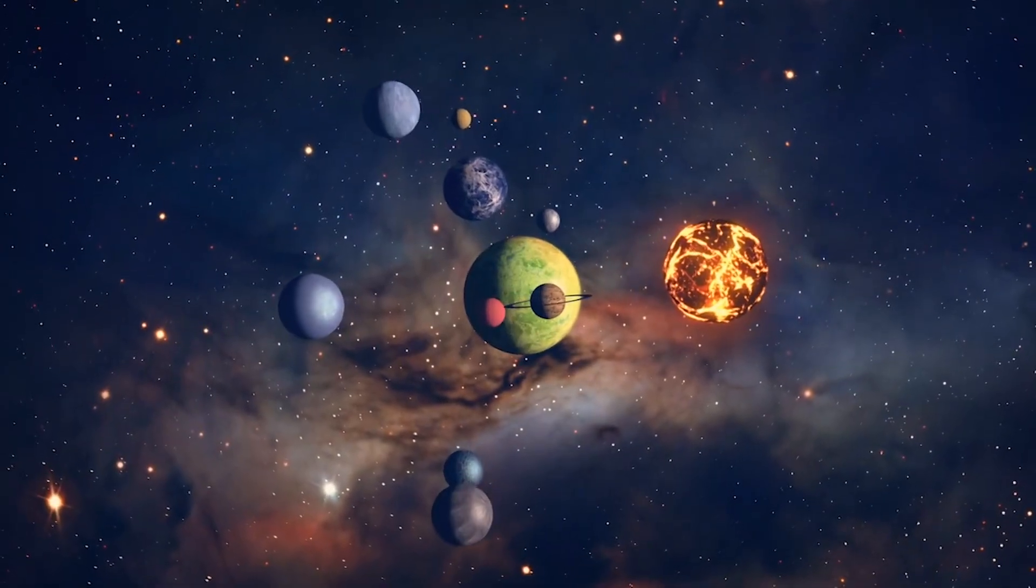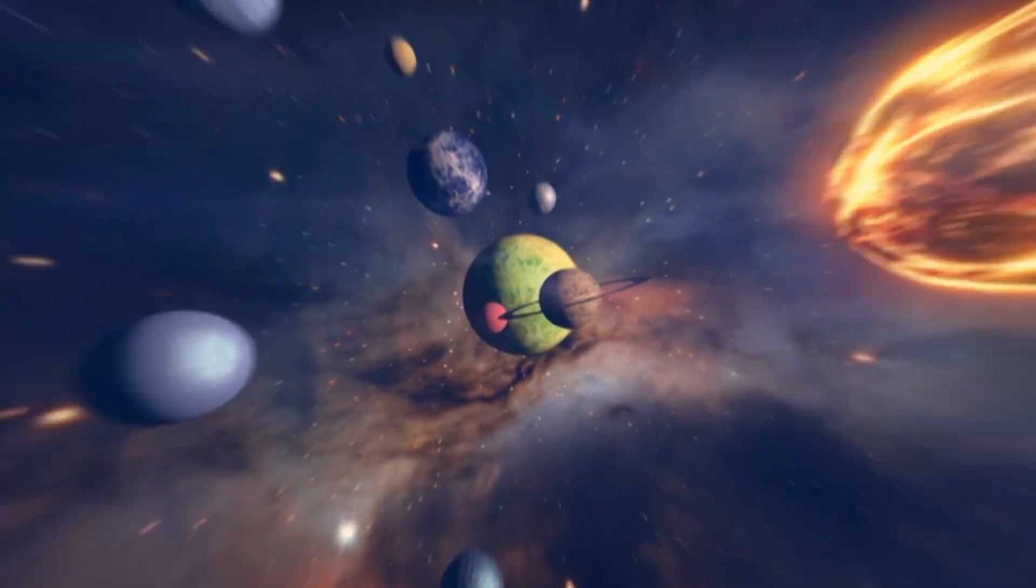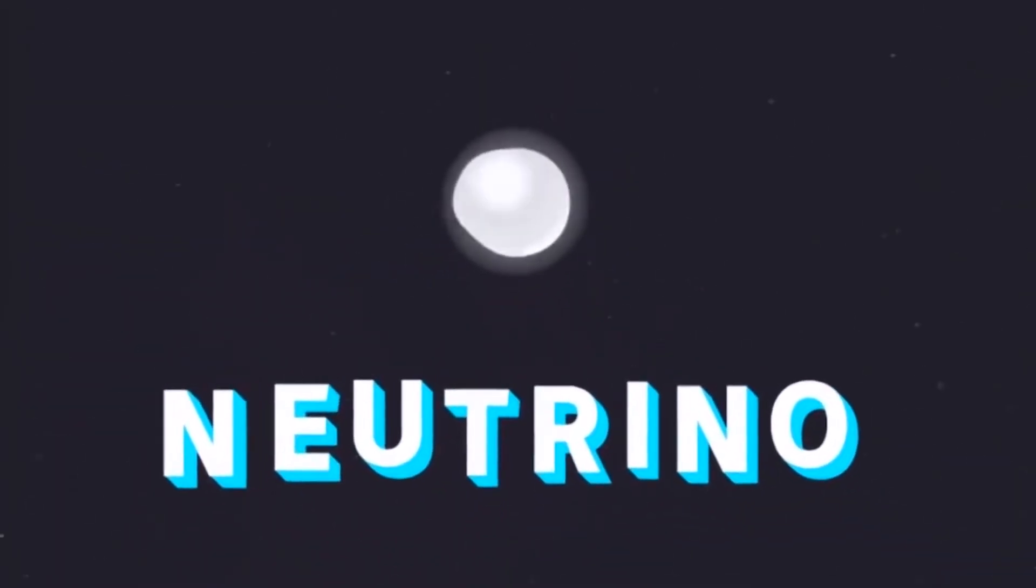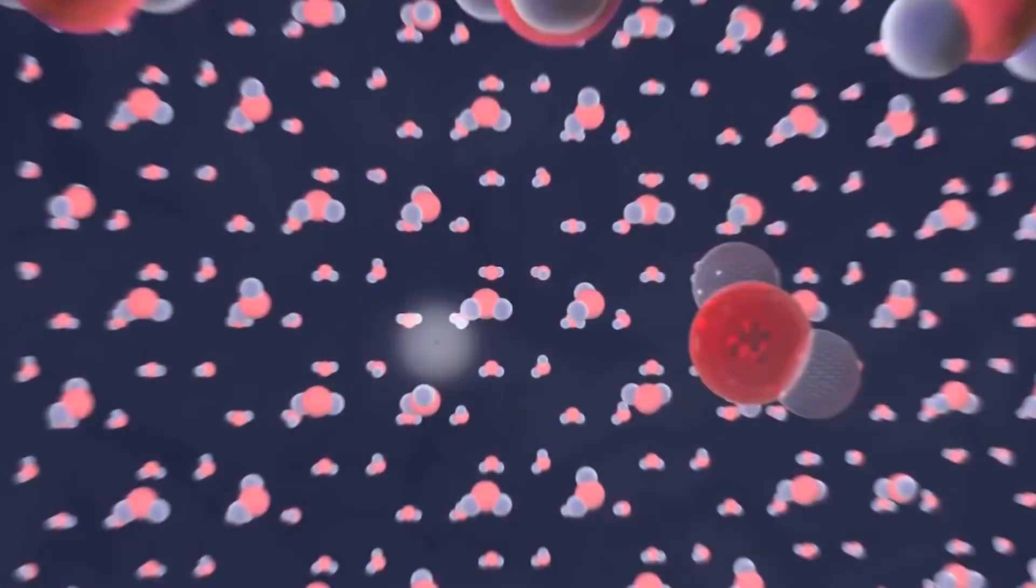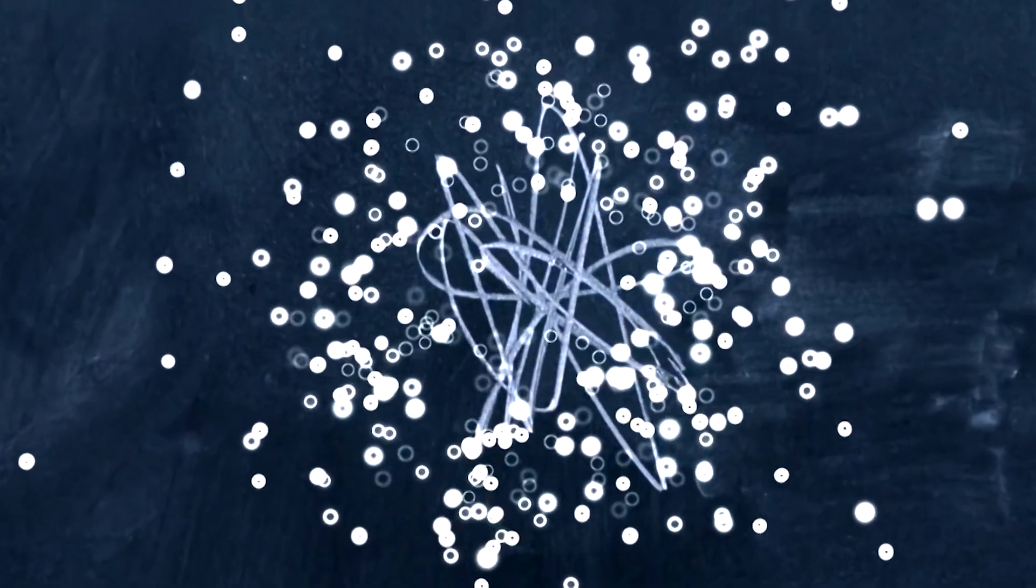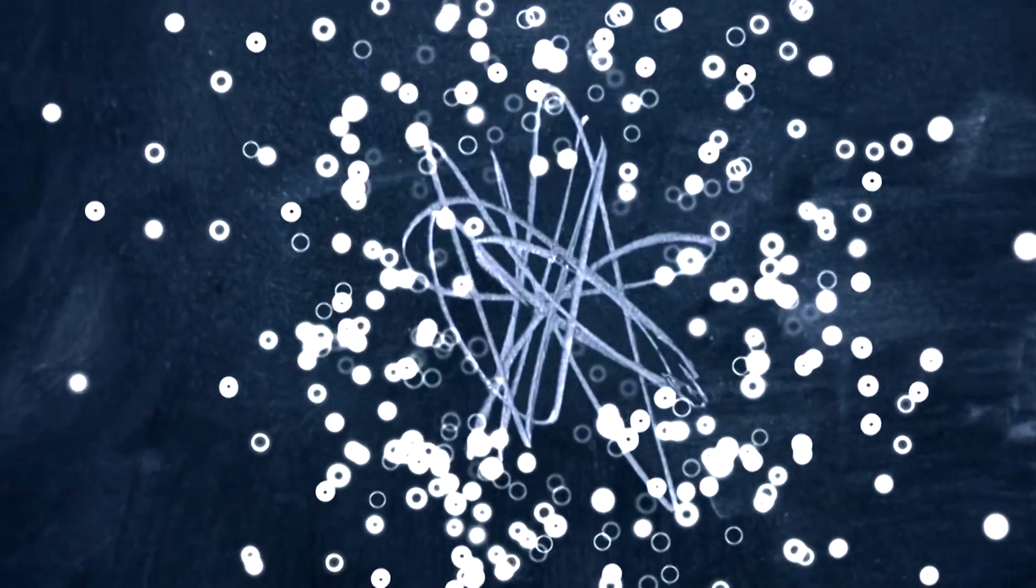Our sun creates enormous quantities of neutrinos and many of them end up assaulting the planet. Scientists developed several detectors to capture these neutrinos, but their tests could only detect one third of the neutrinos they had projected.